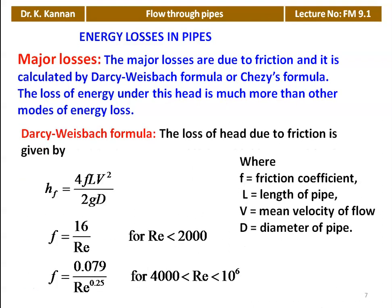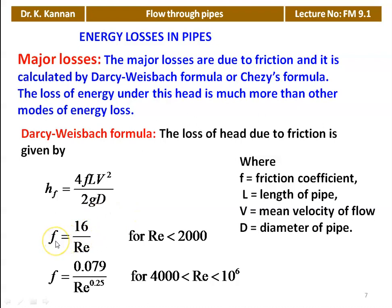The Darcy-Weisbach formula: HF = 4fLV²/(2gD), where f is the friction coefficient, L is the length of the pipe, V is the velocity, and D is the diameter of the pipe. The value of f depends on the Reynolds number: for laminar flow (Re < 2,000), f = 16/Re; for turbulent flow, f = 0.079/Re^0.25. The f value will be given in the problem; if not, calculate it using these equations based on the flow condition.